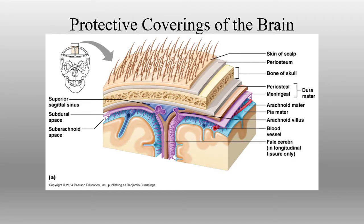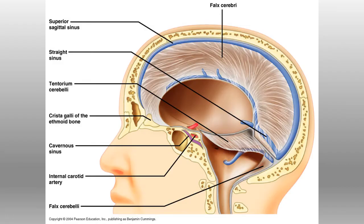This picture shows a little better how the pia mater goes down deep into all of the sulci, while the arachnoid mater and dura mater stay right on the surface. Here we can see the falx cerebri, the tentorium cerebelli — that dividing line between where the cerebrum and the cerebellum are — and the falx cerebelli, showing the separation of the two hemispheres of the cerebellum.